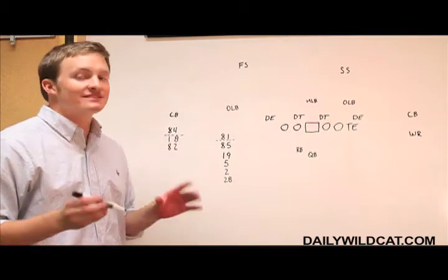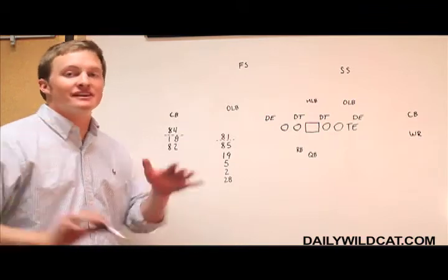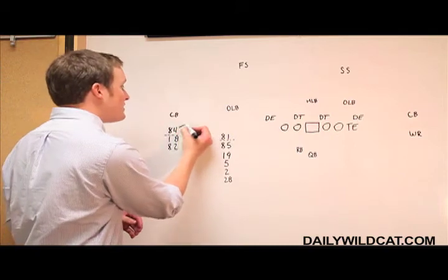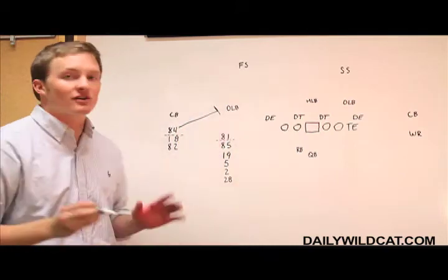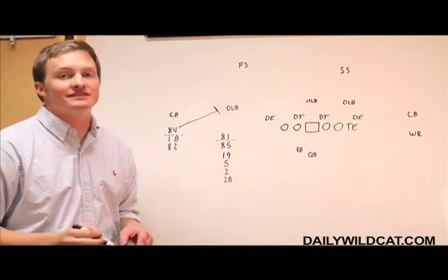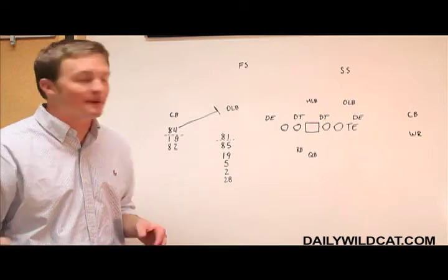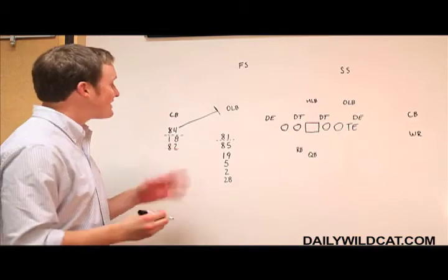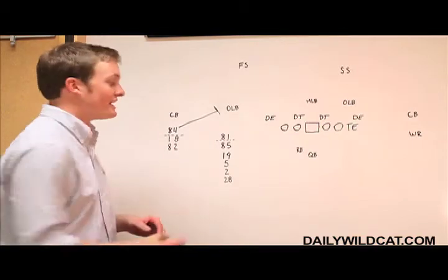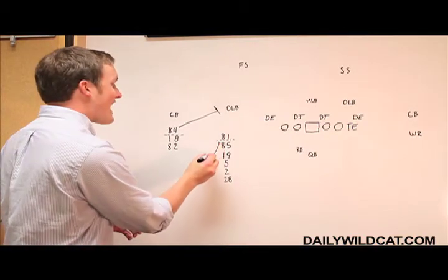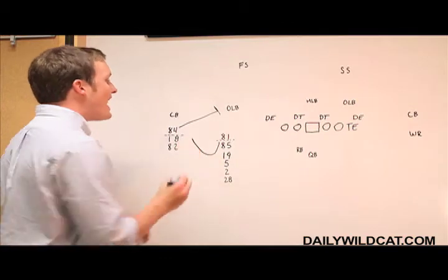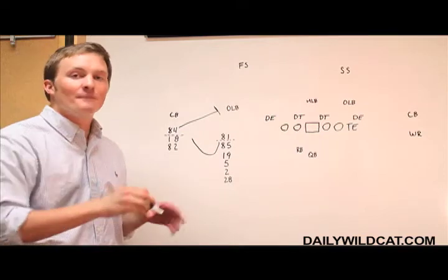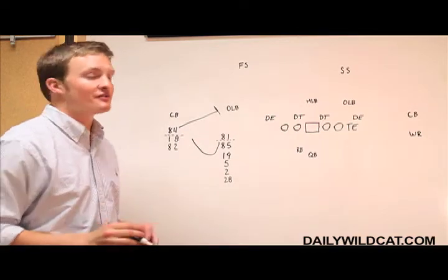Now a bubble screen is the same as a rocket screen, but to the opposite side. You have the outside receiver cracking, so he comes to the outside linebacker or the nearest guy. It could be the free safety depending upon how the defense is lining up. The outside receiver, just like the inside receiver, just like the outside receiver did on a rocket screen, takes a step back and makes a half circle behind the line of scrimmage and then comes back towards the line of scrimmage so that when he catches the ball, it's an easy run and his momentum is going forward.